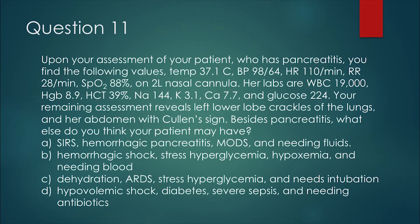Question 11. Upon your assessment of your patient who has pancreatitis, you find the following values: a temperature of 37.1 degrees Celsius, BP of 98 over 64, a heart rate of 110 per minute, and a respiratory rate of 28 per minute, while her SpO2 is 88% on 2 liters nasal cannula.